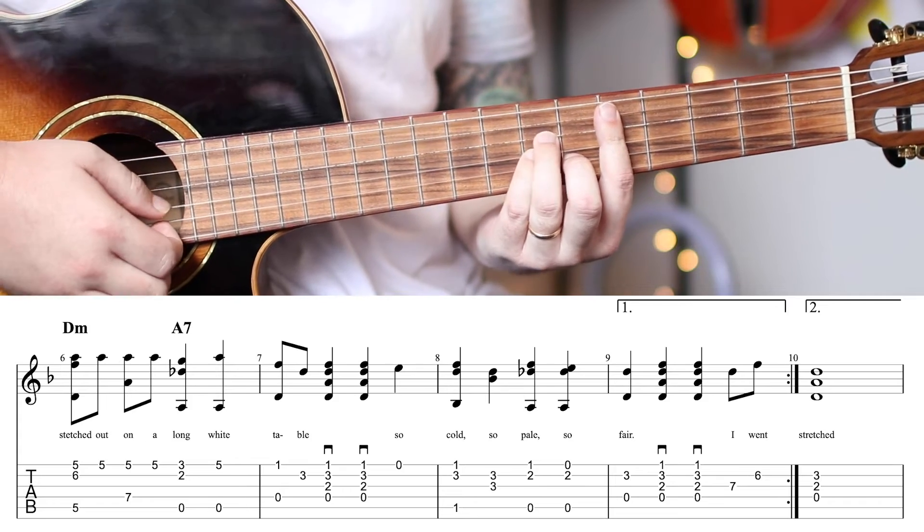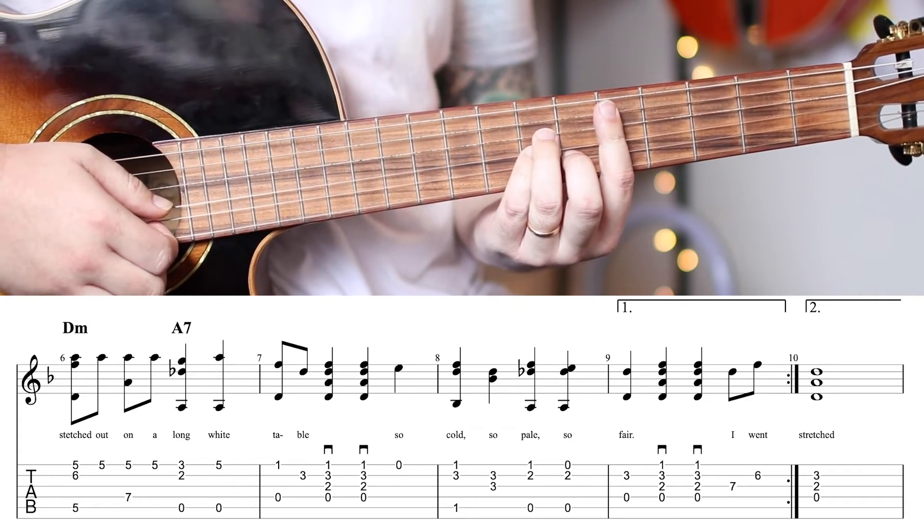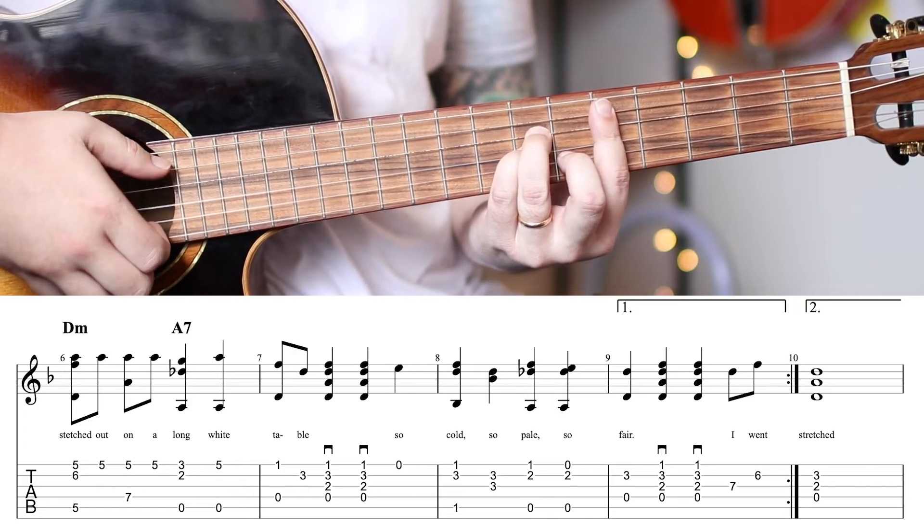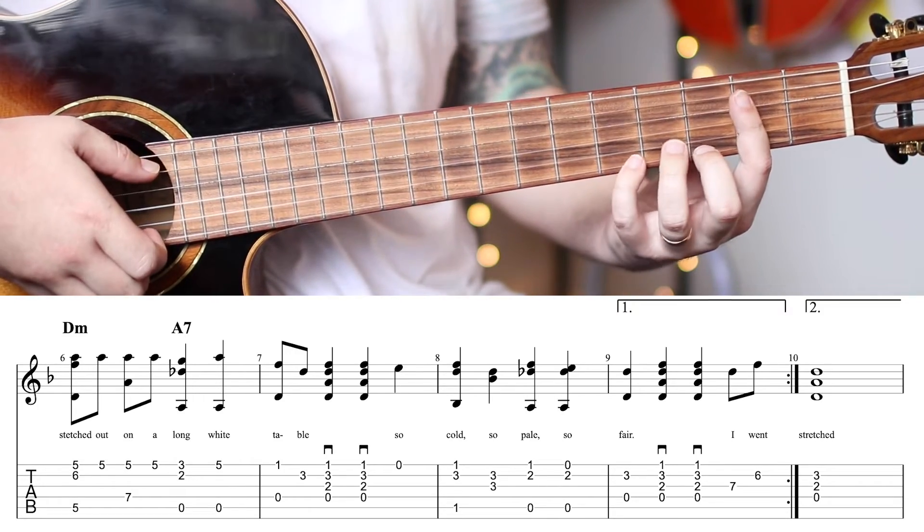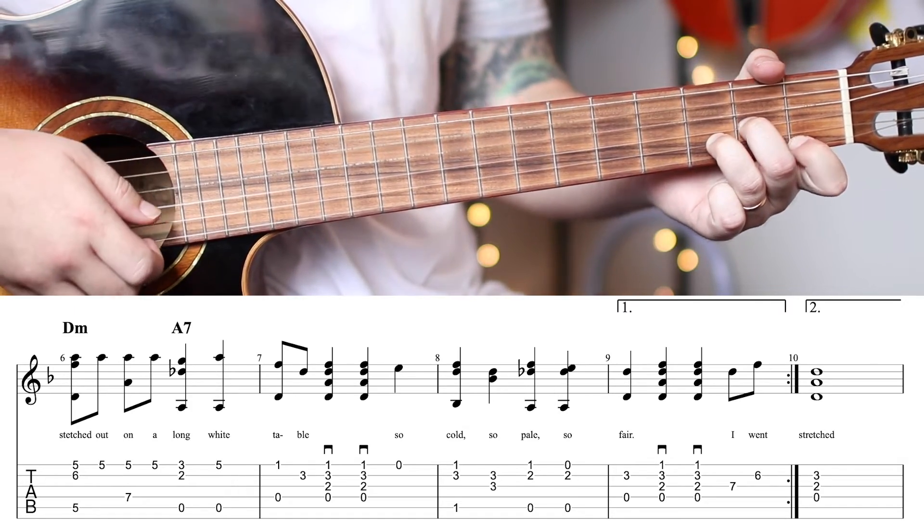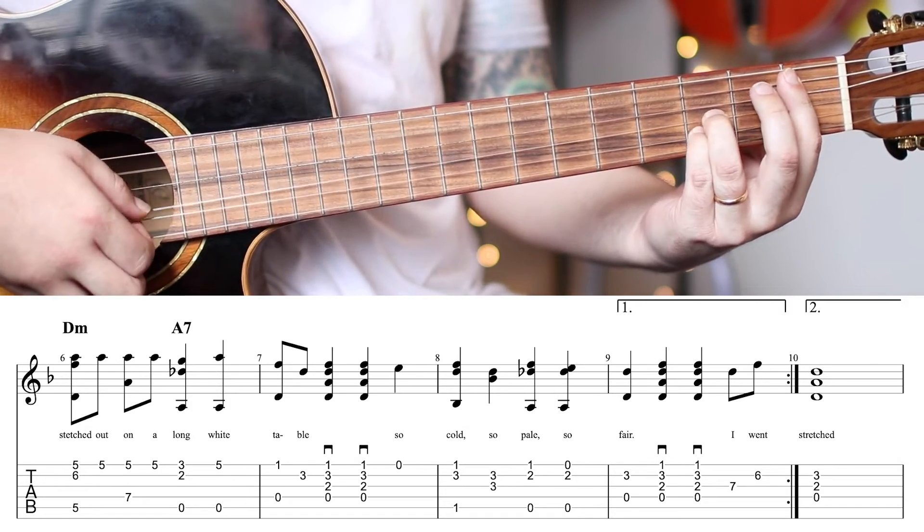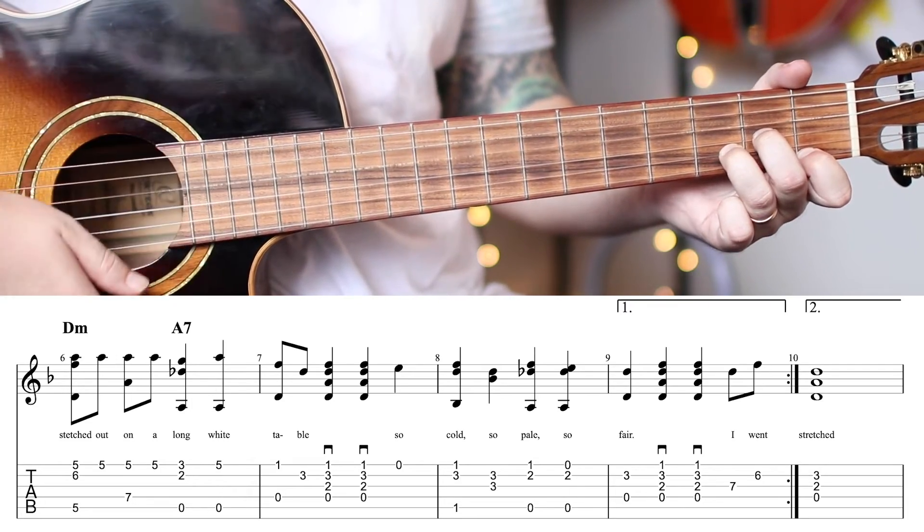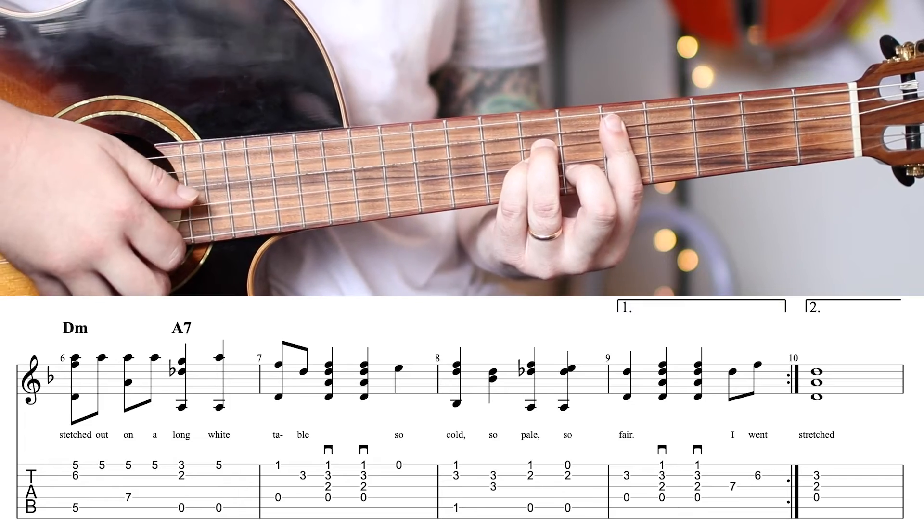So, let's play these 2nd 4 measures together, nice and slow. 1, 2, 3, 4, and 1, and 2, and 3, 4, 1, and 2, 3, 4, 1, 2, 3, 4, 1, 2, 3, 4, and 1.